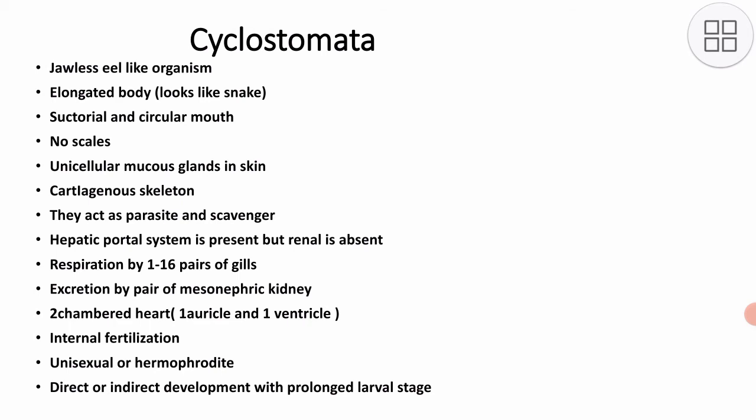They have a two-chambered heart with one auricle and one ventricle. Fertilization is internal and they may be unisexual or hermaphrodite. Development may be direct or indirect; if indirect, then with prolonged larval stages.